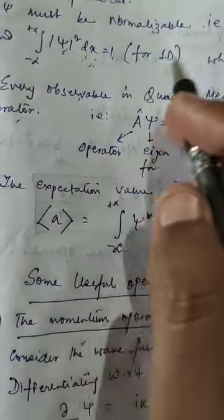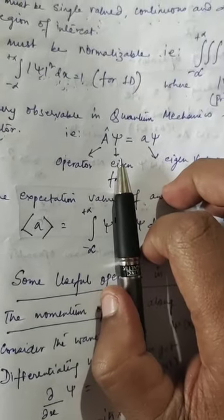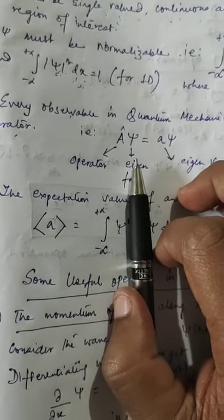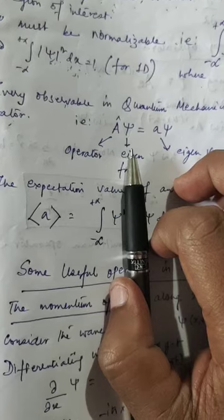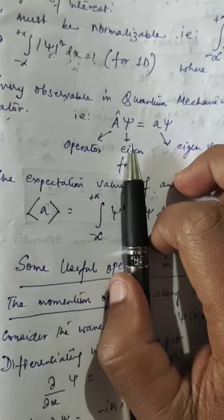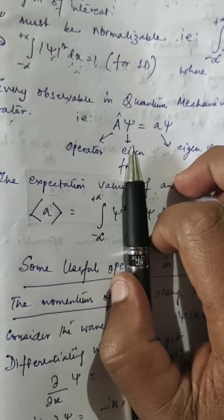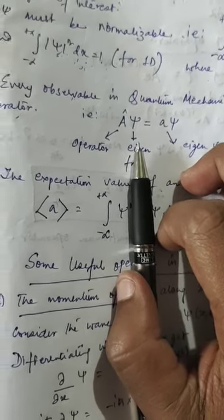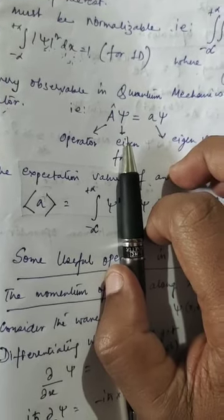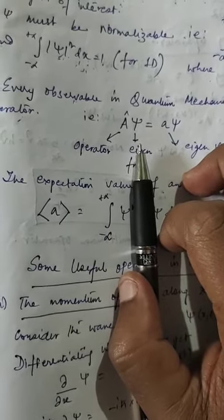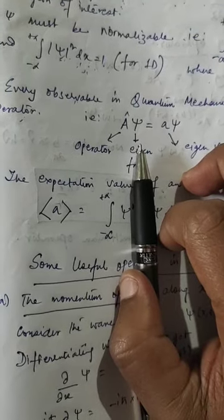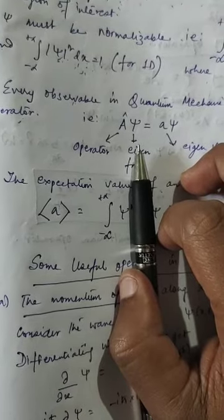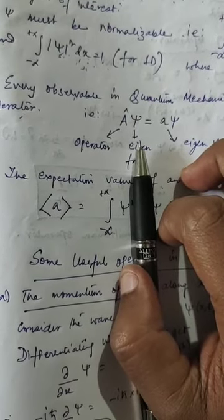Now why do we need operators in quantum mechanics? In classical mechanics, even if we don't measure the position of a particle, it doesn't matter — the position is there. Even if I do not look at an electron, the electron has a certain position, a certain energy, a certain momentum. It is immaterial whether I observe the particle or not.